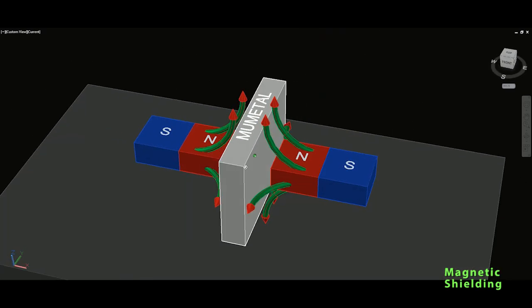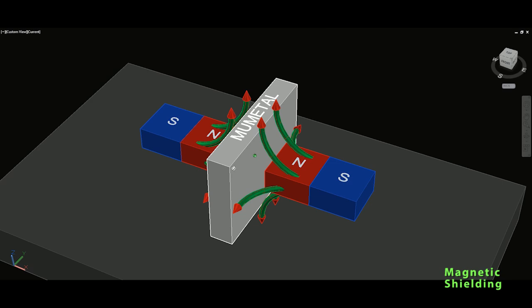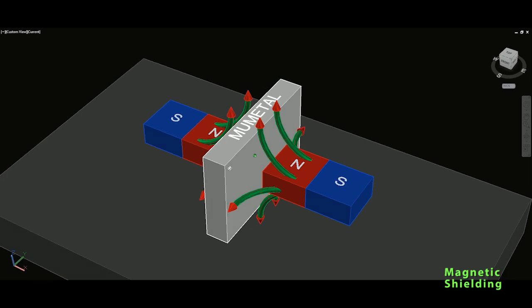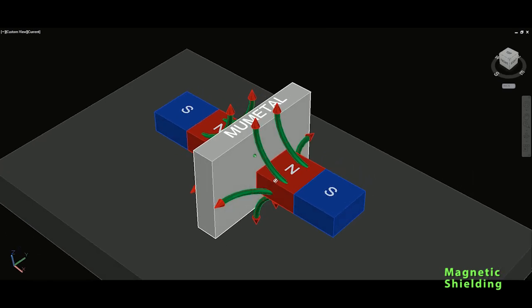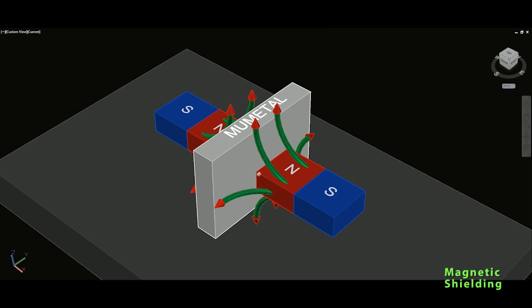So that's what mu metal does. It does not block directly, let's say perpendicular magnetic field, but it provides a path for magnetic lines to go around it. So that's what it does.